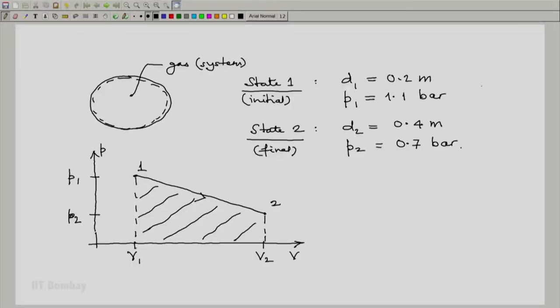The first thing we notice is that we must determine the initial volume V1 and final volume V2, just as we wrote the pressures here: initial pressure of 1.1 bar and final pressure of 0.7 bar, so we can quantify the values of the volumes.